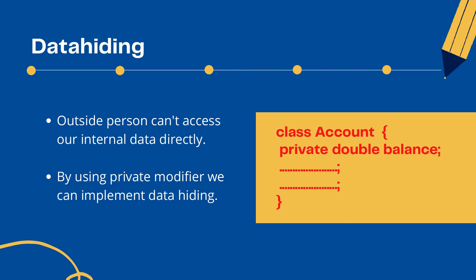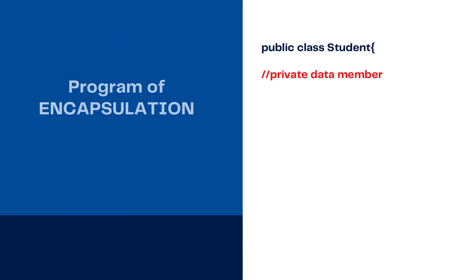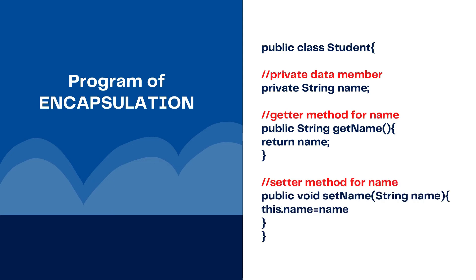Suppose in any interview the interviewer asks you to write an encapsulation program. Here is a basic demonstration — you can see we have declared a variable, string name, and it is private, which covers the data hiding part. To achieve encapsulation, you also need getter and setter methods for that variable, because you can't access private variables directly. To read the data you need a getter method, and to set a value you need a setter method. These are the must-have methods when implementing encapsulation.